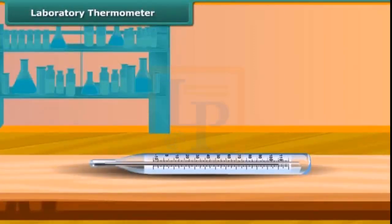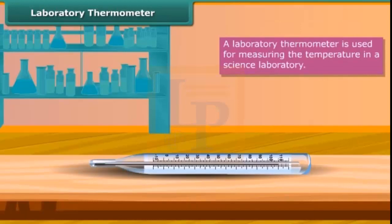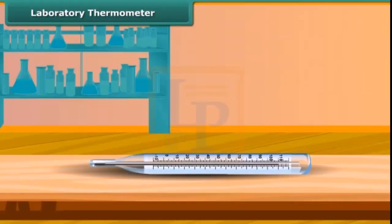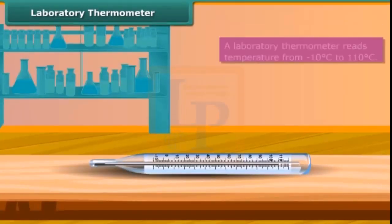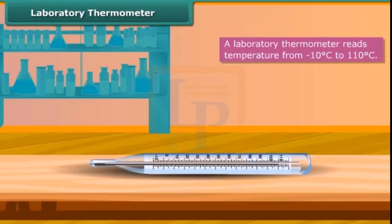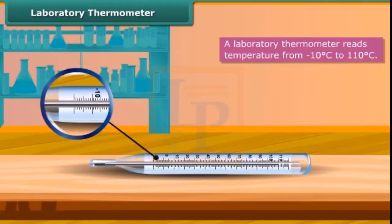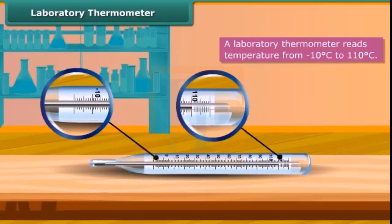Let us now discuss laboratory thermometer. A laboratory thermometer is used for measuring the temperature in a science laboratory. It is similar to clinical thermometer, but is long and narrow. A laboratory thermometer reads temperature from minus 10 degrees Celsius to 110 degrees Celsius.